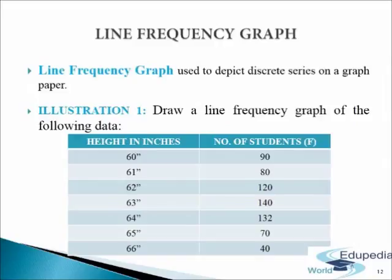Let us start with line frequency graph. These are used to depict discrete series on a graph paper. In these graphs, values or items are taken on the x-axis. Corresponding frequencies are taken on the y-axis. Frequencies are plotted in the form of vertical straight lines. Let us understand this with the help of the following illustration.